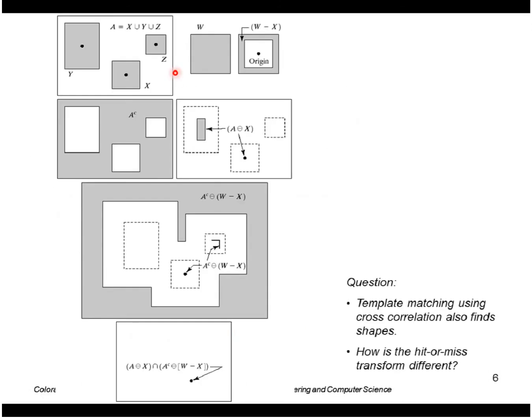So here's an example. Here's an image set A consisting of these three distinct places. And let's say we want to look for shape X in this image here. So we first find the erosion of A by X. So that's actually shown here. The locations where X fits entirely within A is this single point here and then a whole bunch of places here, because that region is pretty large.